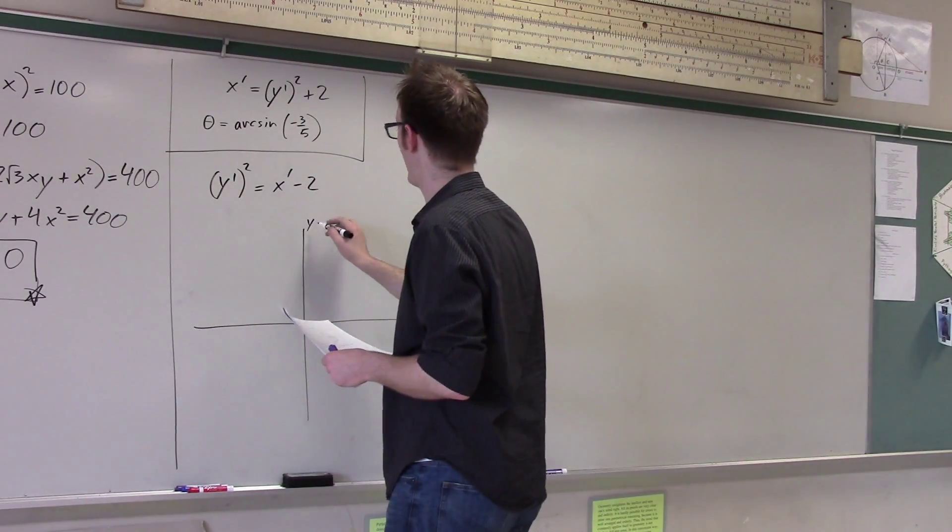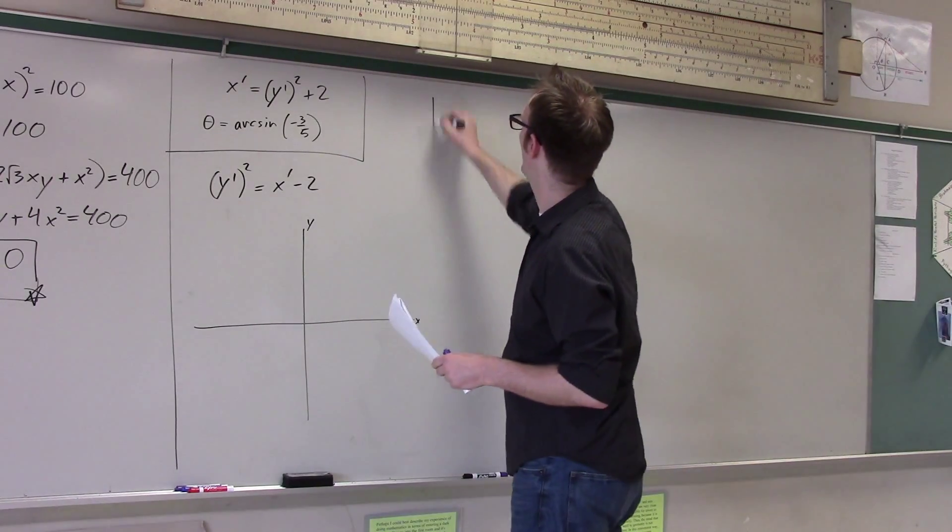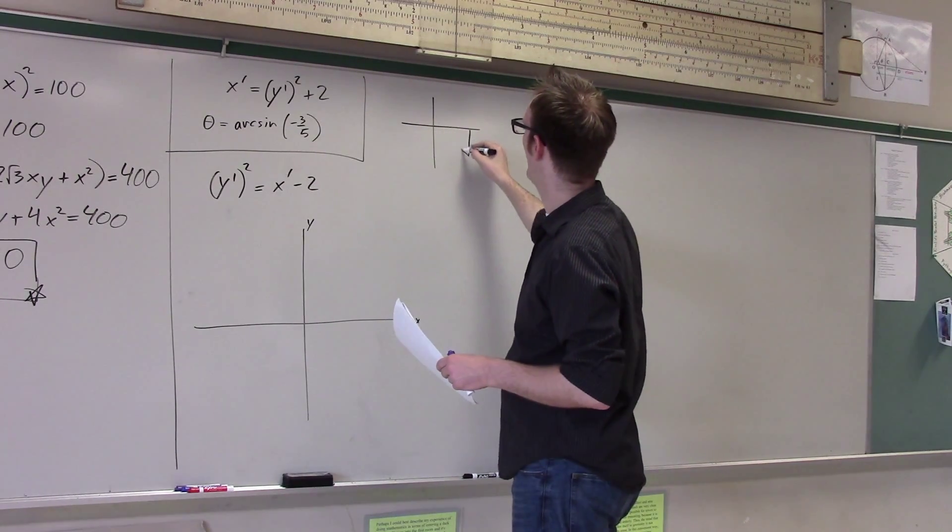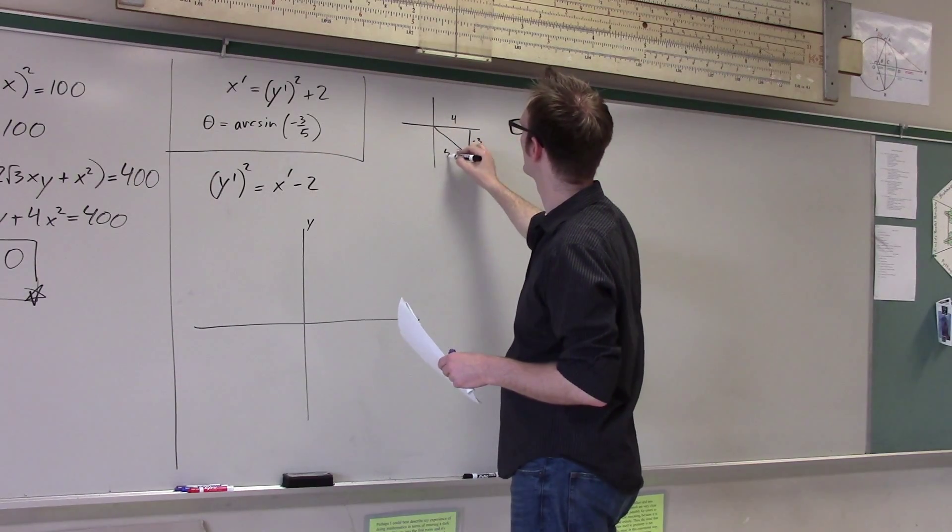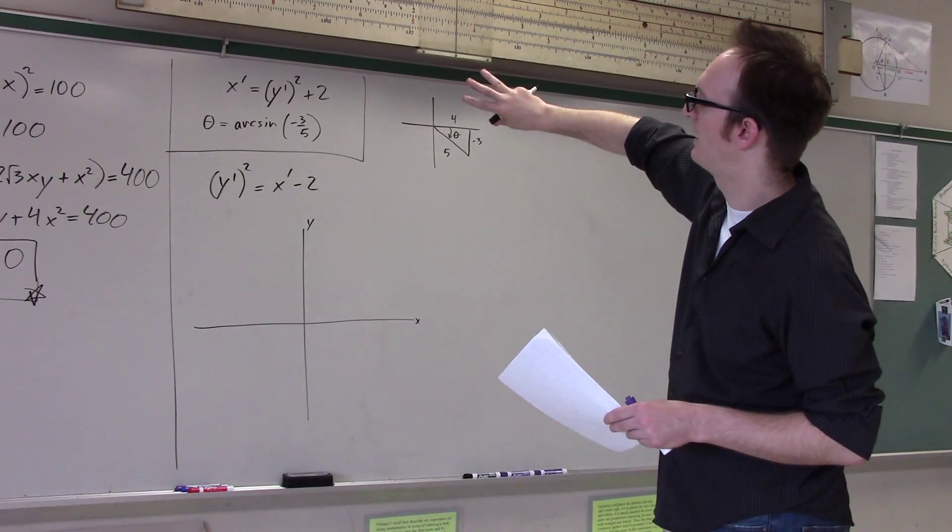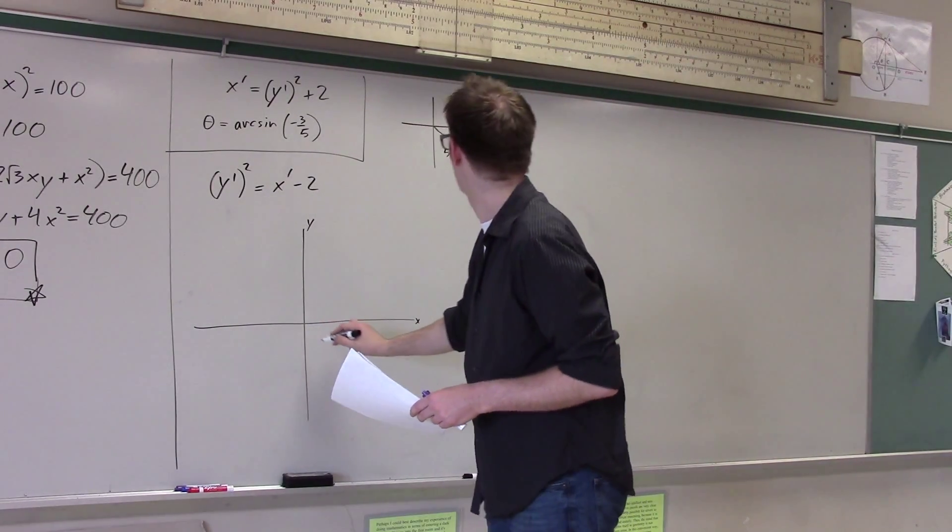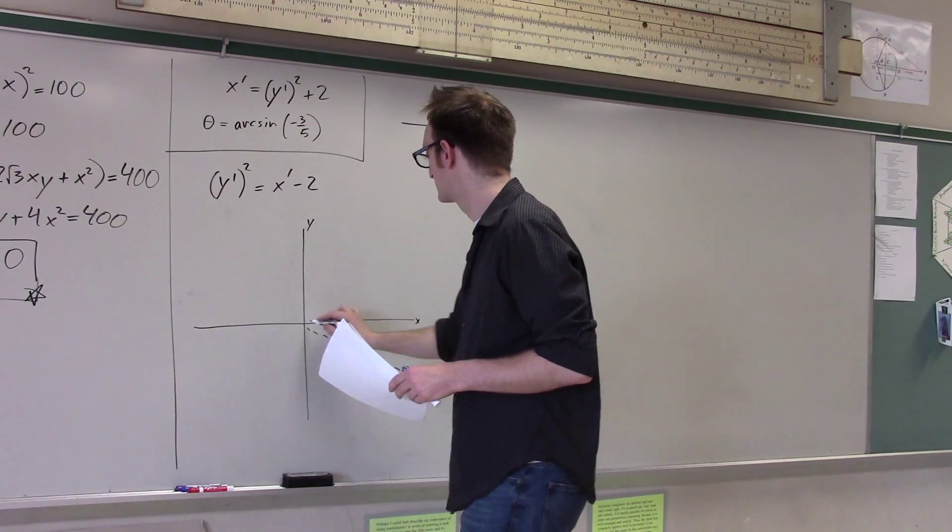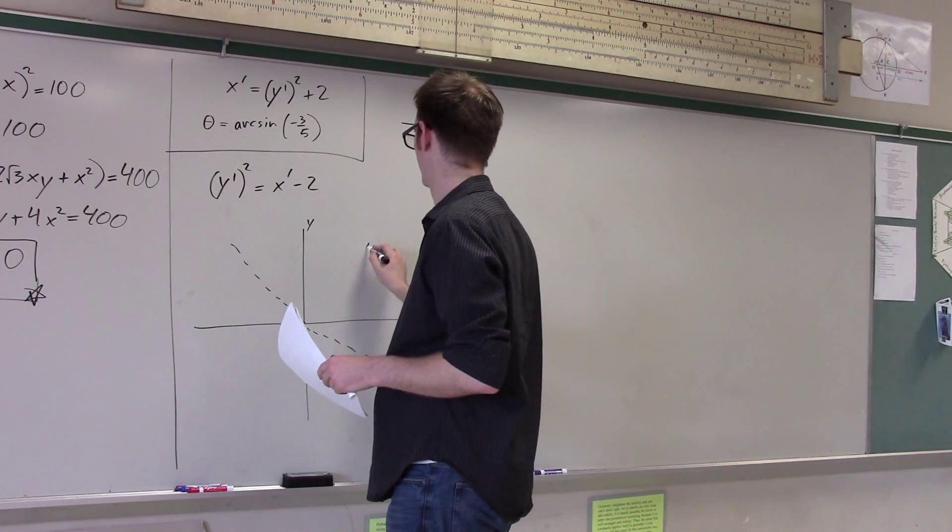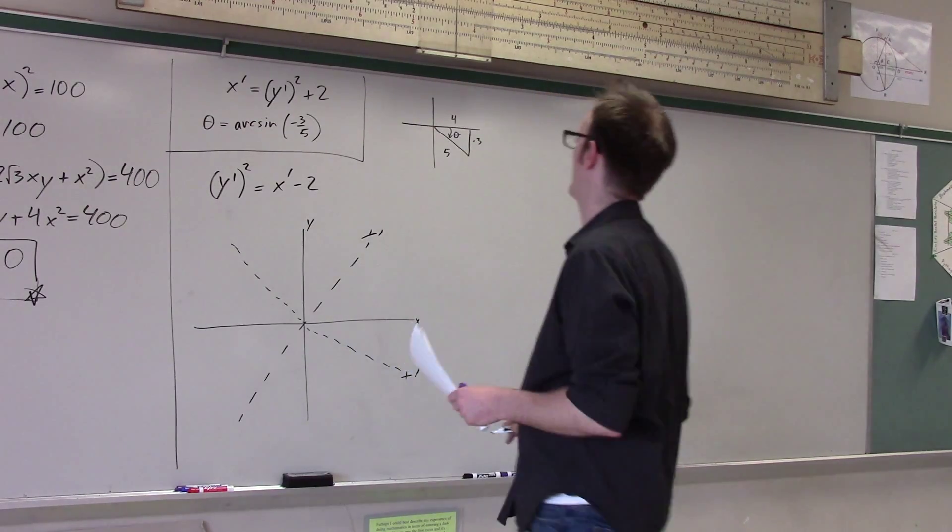Well, this is the x-axis. This is the y-axis. And now I'm going to rotate by arc sine negative three-fifths. How much is arc sine negative three-fifths? Well, it's like I need to go... Yeah, like that much, right? So where that's four and that's negative three and that's five. So that is my angle. So I'm rotating counterclockwise now. Or clockwise, I guess. So these are my new axes are like this or something. Yeah. And this is my y-prime axis and this is my x-prime axis.